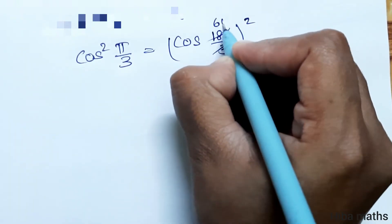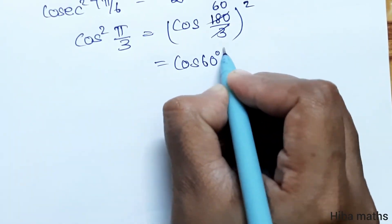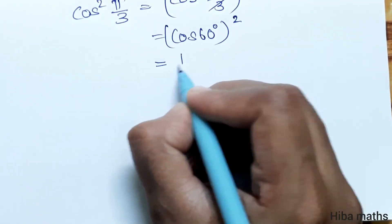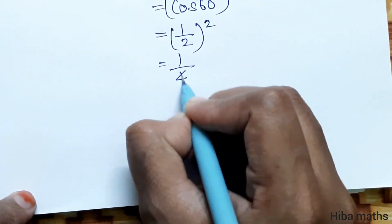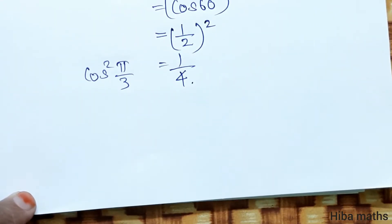3 × 6 = 18, so cos²(60°). Cos 60° value is 1/2. That equals (1/2)² = 1/4. Cos²(π/3) equals 1/4.